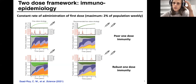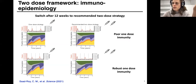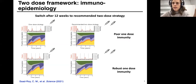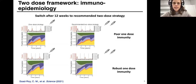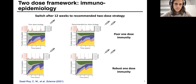One thing we could easily do with the model was say: instead of always giving one dose or always two doses, switch to the recommended schedule after a certain delay — which we took to be 12 weeks — reflecting the assumption that supplies would increase over time. The benefit of this strategy is that if single-dose immunity were less robust, you can mitigate that by following up with the second dose on a timescale shorter than we expect immunity to wane. Qualitatively, these images are now dominated by more yellow, which reflects waned immunity after two doses instead of one.